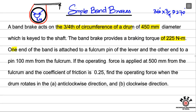One end of the band is attached to a fulcrum pin of the lever. The other end is attached to a pin 100 mm from the fulcrum. The force is applied 500 mm from the fulcrum and the coefficient of friction is 0.25. Find the operating force.